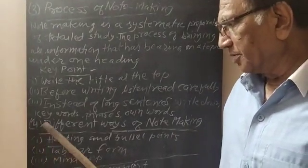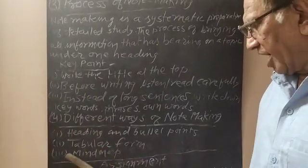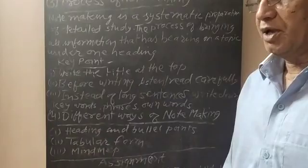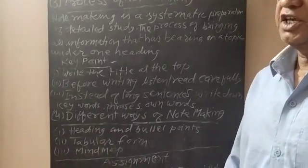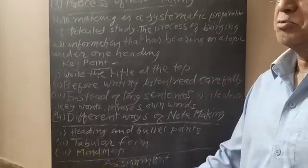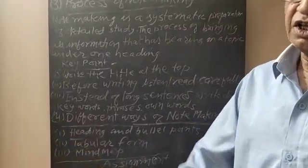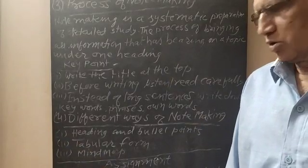These are the three different ways. Heading and bullet form, tabular form and mind map. Mind map means just like a tree, which has one trunk and then branches, and from branches there are twigs, in this way he writes the note.